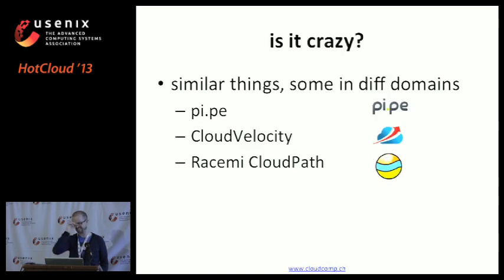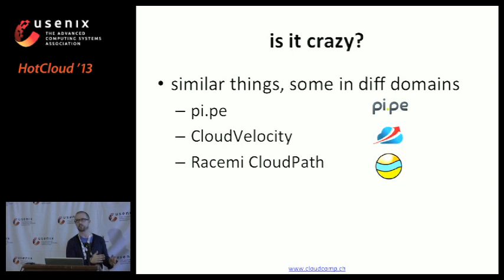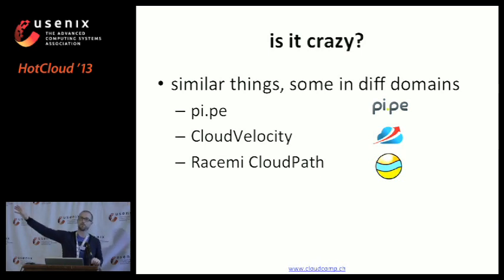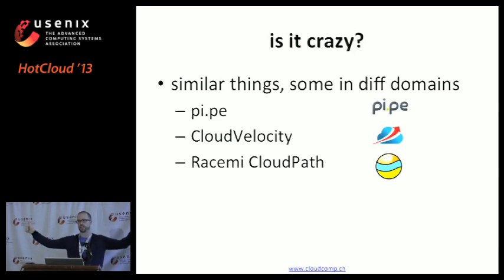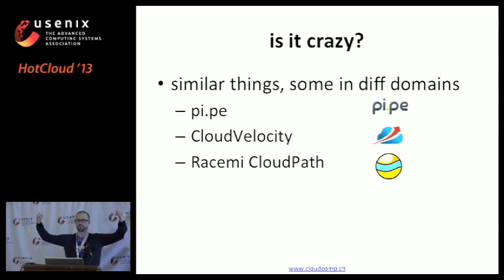Is it crazy? There are similar tools out there today that somewhat go in the direction of where Fluid Cloud wants to. You have Pipe, which will take your Google Docs running on Google Drive and push them across onto Dropbox, doing the conversion of file formats - very much similar to the Viaducts and the Migrators. Cloud Velocity and RaceMe CloudPad actually do the infrastructure to infrastructure relocation between different clouds, such as Amazon EC2 and Rackspace.